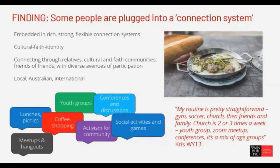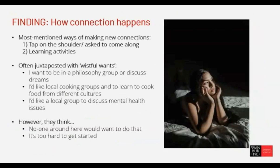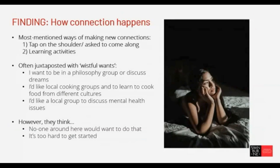The most mentioned ways of making new connections were being 'tapped on the shoulder' and learning activities. These were often juxtaposed with 'wistful wants' — people saying things like, 'I go to that book group because my neighbor took me, but actually I want to be in a philosophy group, or learn cooking, or discuss mental health issues.' However, these people invariably seem to think that no one around here would want to do that, and it's too hard to get connected.